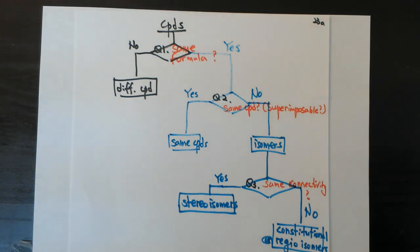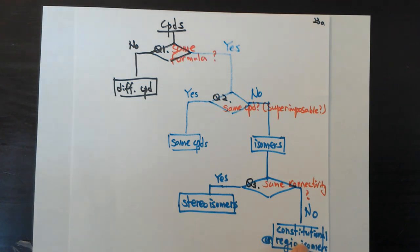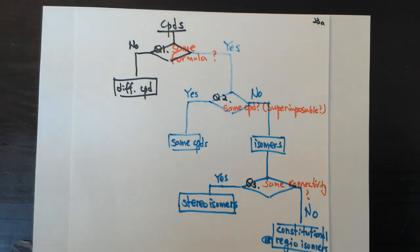From the beginning of the flowchart: check the formula, then check whether they are the same compound. If not, they are isomers. If the connectivity differs, they are constitutional or regio isomers. But when the connectivity is the same and the structures still differ, they are stereoisomers — and the difference can be very subtle, so you need to practice a lot.